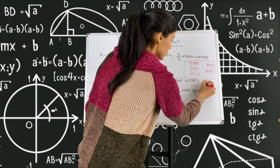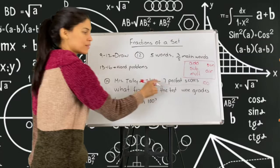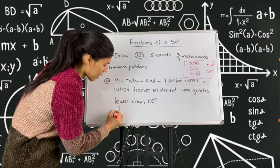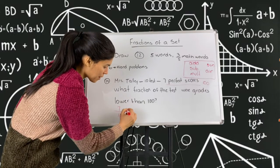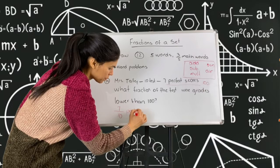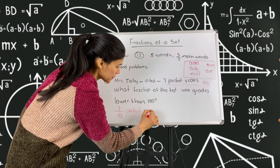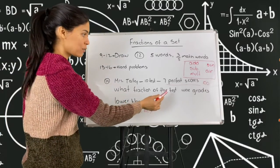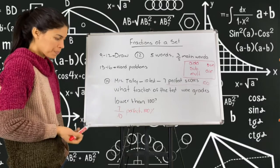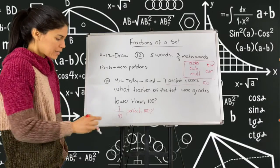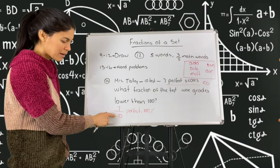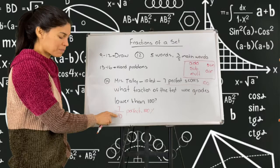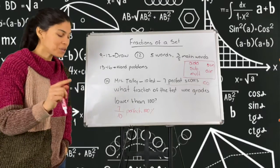And seven of the 10 are perfect score, so let me write the fraction. Seven out of the 10 are perfect or 100 percent. But the question is not how many are perfect. The question is what fraction of the test were grades lower than 100? So which one should be lower? If seven were perfect, it means that how many are left from the 10? I already have seven that are perfect and there are three missing.